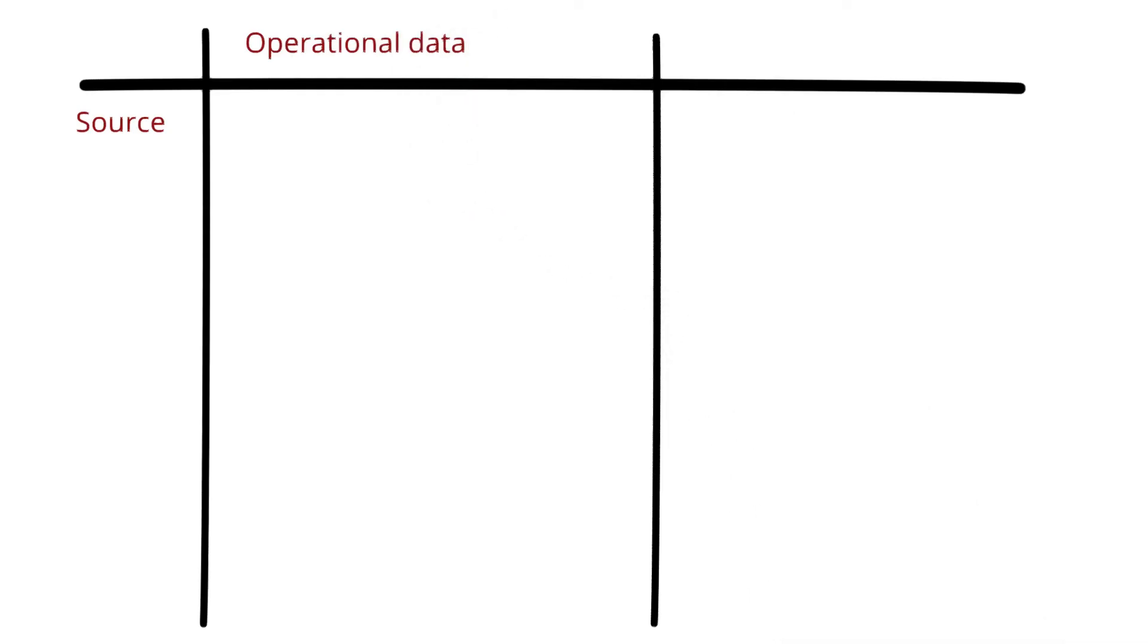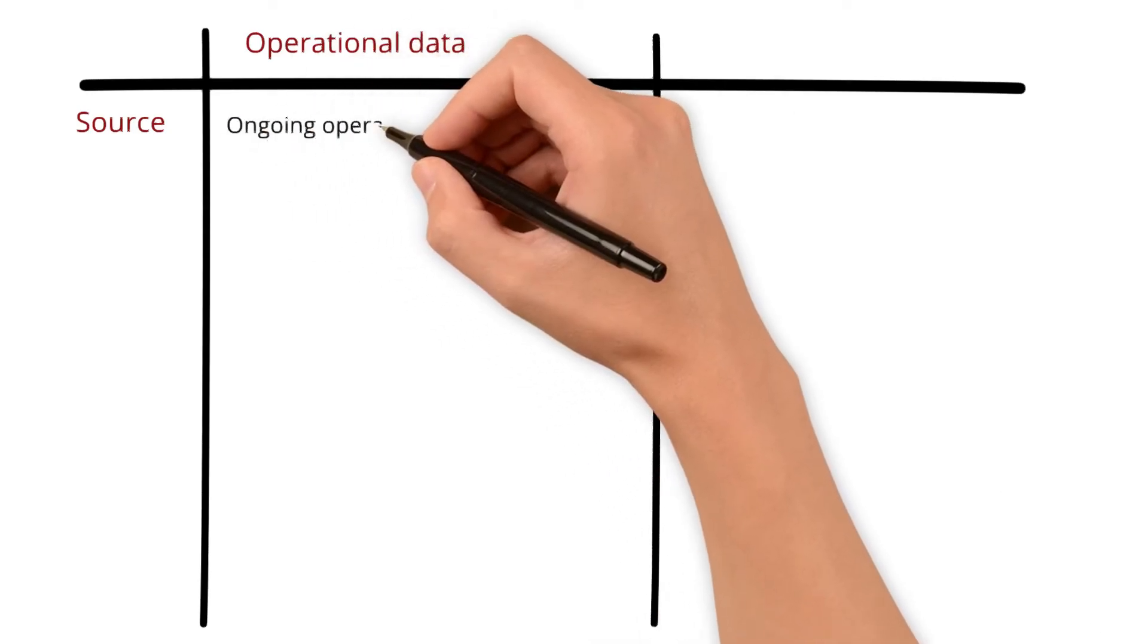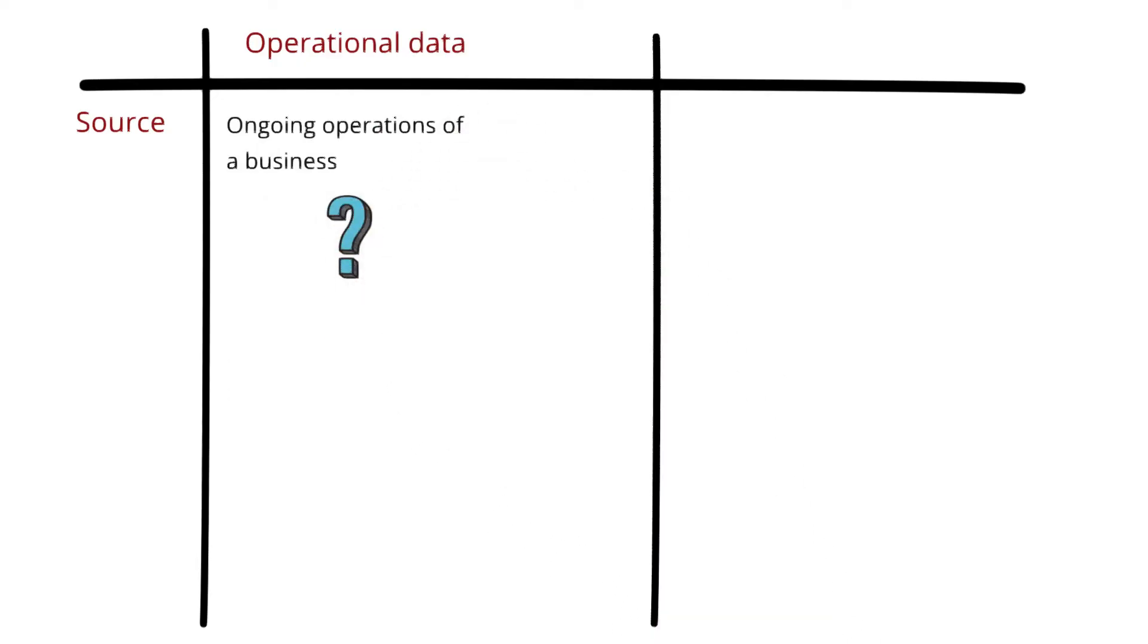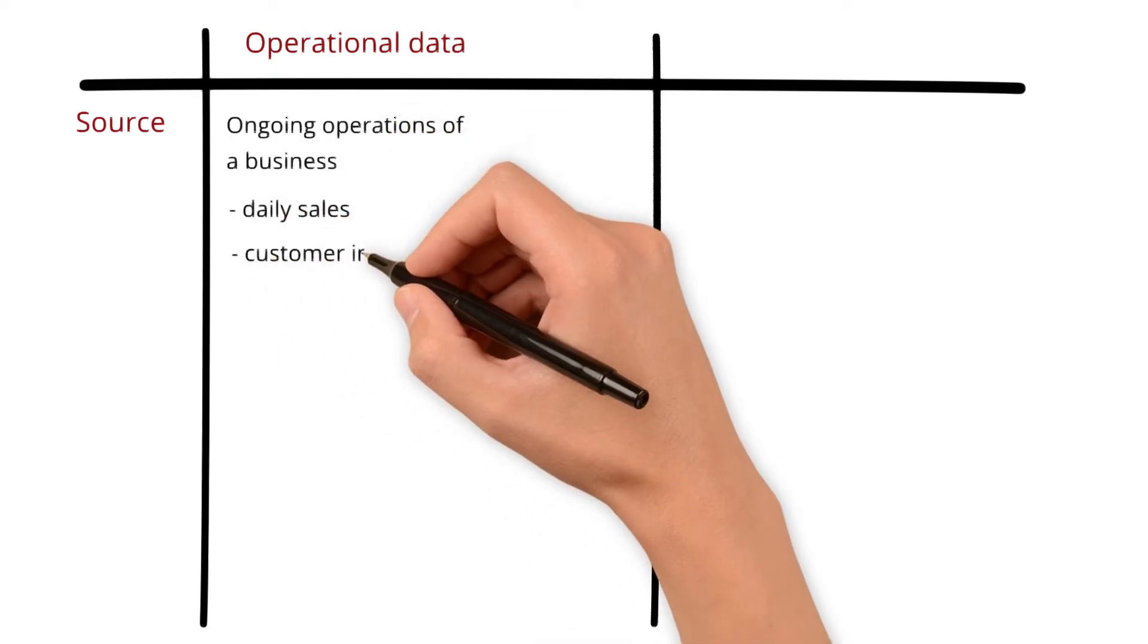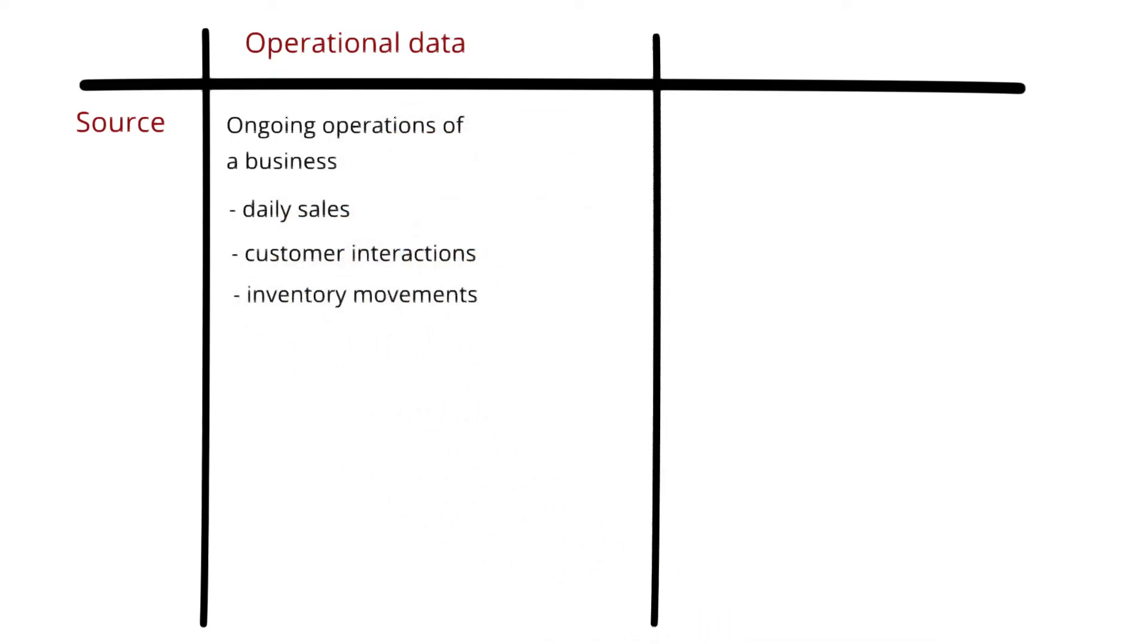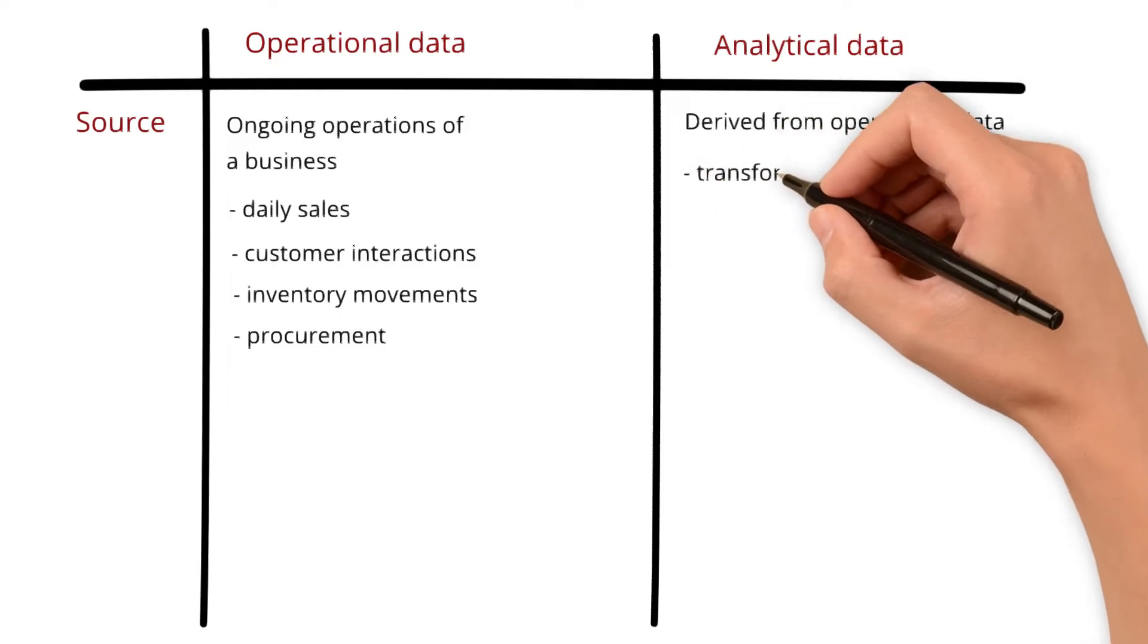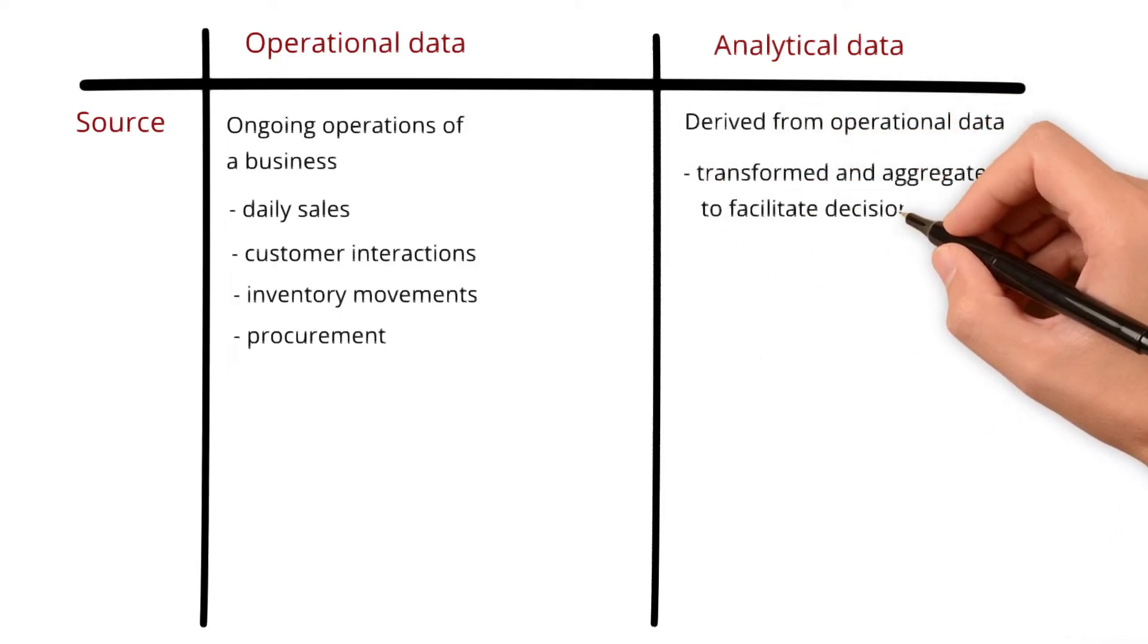Operational data originates directly from the ongoing operations of a business. What are the ongoing operations? We discussed before. They include daily sales, customer interactions, inventory movements, and procurement. These are the ongoing operations that we are talking about. On the other hand, analytical data is derived from operational data, but transformed and aggregated to facilitate decision making.